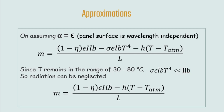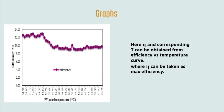Simplifying the equation, the mass flow rate is: (1 − η)·ε·I·L·b − σ·ε·L·b·T⁴ − h·(T − T_atm), divided by the latent heat of vaporization. Since solar panel surface temperatures generally remain in the range of 30 to 80°C, radiation from the top surface is negligible compared to energy absorbed or lost via convection. So we neglect the σ·ε·L·b·T⁴ term. From the experimental graph of efficiency versus temperature, the optimal temperature for maximum efficiency is around 55°C, with efficiency approximately 12.5%.